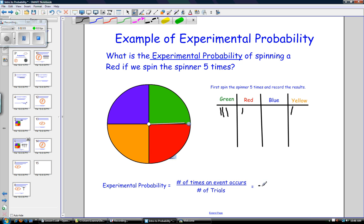So, to write the experimental probability, it is the number of times an event occurs. How many times did we get red? We got red one time, so I put that on top, over the number of trials: one, two, three, four, five trials. So, the experimental probability of spinning red is one over five.